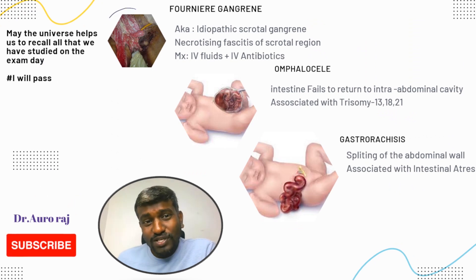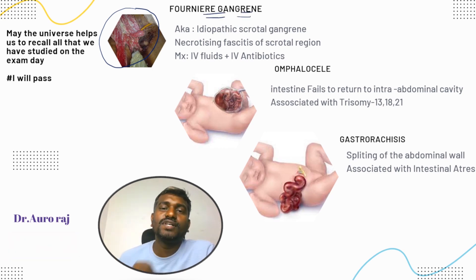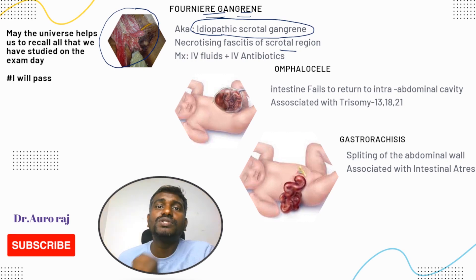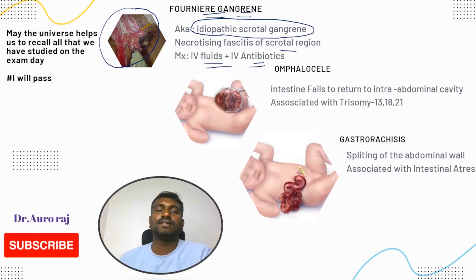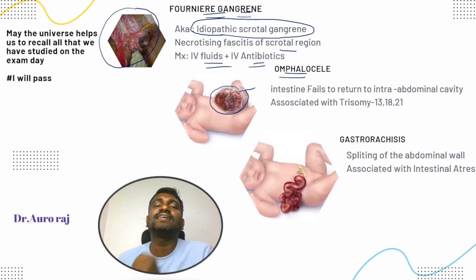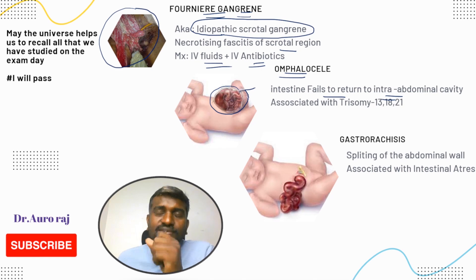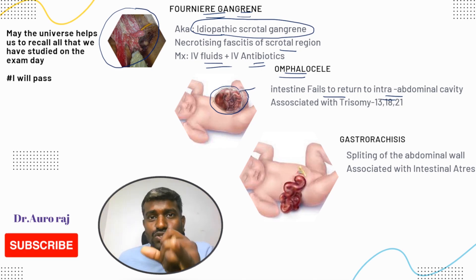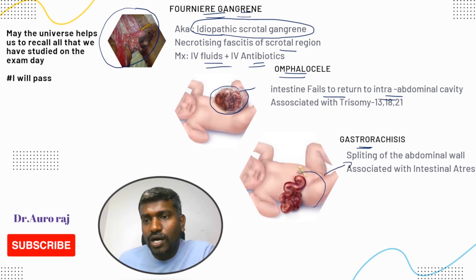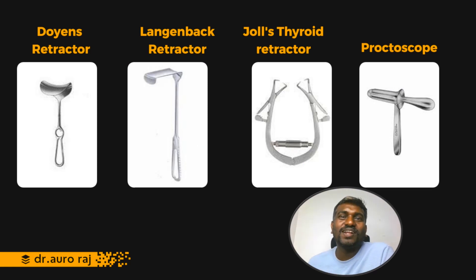This is Fournier gangrene — necrotizing fasciitis of the scrotal region, also called idiopathic scrotal gangrene. Managed with IV fluids and IV antibiotics. The next image shows a thin membrane — this is omphalocele, where the intestine fails to return into the abdominal cavity, associated with trisomy 13, 18, and 21. In gastroschisis there is no membrane; it is due to splitting of the abdominal wall and is associated with intestinal atresia.